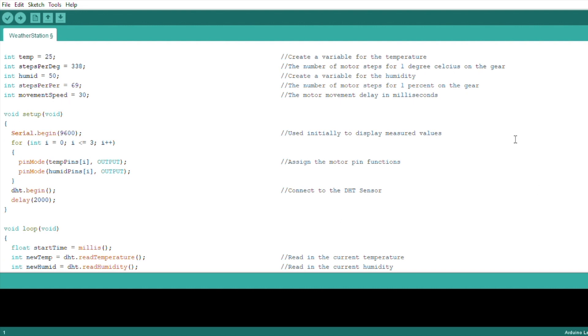In the setup function, we start serial communication, which is used to see what the actual measured values are in order to compare them to what is displayed during initial setup. We then assign the stepper motor driver pin numbers and connect to the DHT sensor.